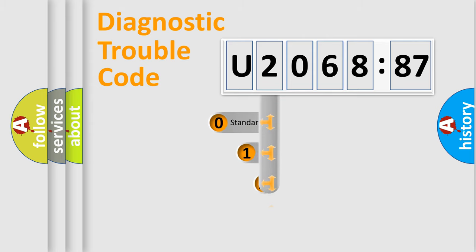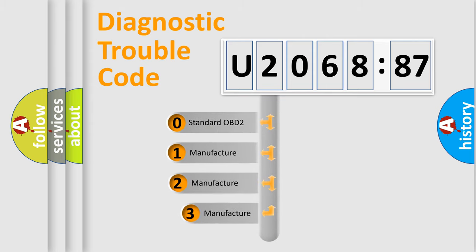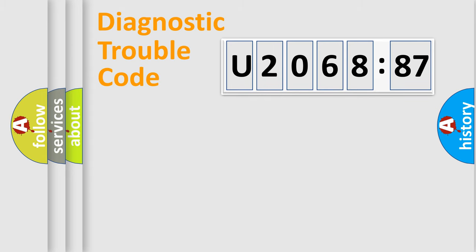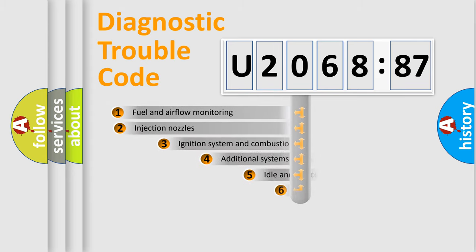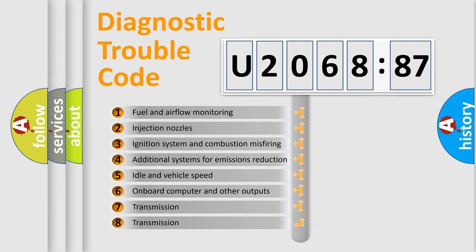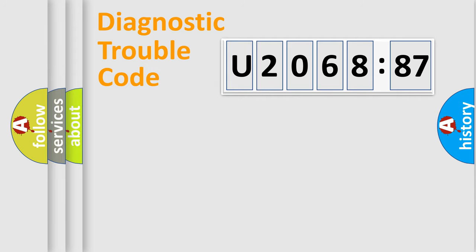This distribution is defined in the first character code. If the second character is expressed as zero, it is a standardized error. In the case of numbers 1, 2, or 3, it is a manufacturer-specific expression of the car-specific error. The third character specifies a subset of errors. The distribution shown is valid only for the standardized DTC code.